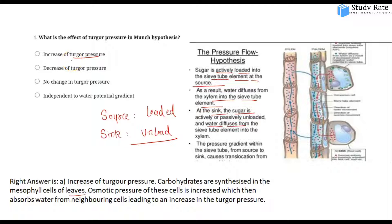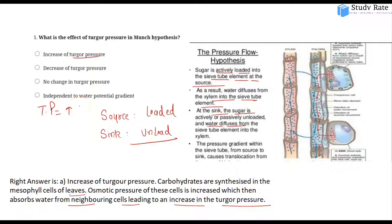Leaves are mesophilic cells where carbohydrate is synthesized. This increases osmotic pressure in the leaves' mesophilic cells, causing water to be absorbed. What happens here is the osmotic pressure and turgor pressure both increase when water enters any cell, so the cells maintain their shape.